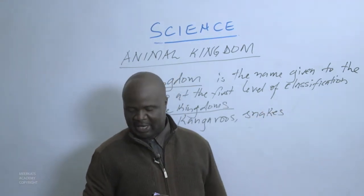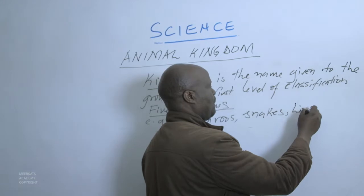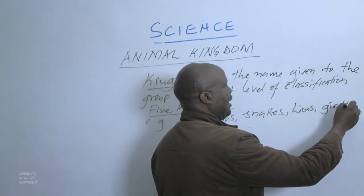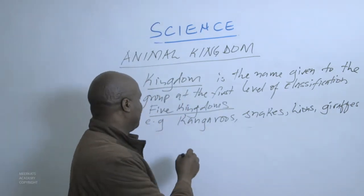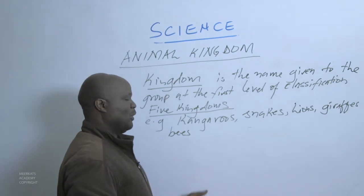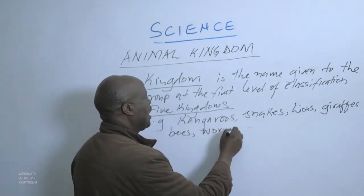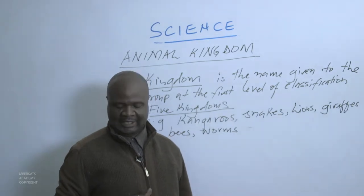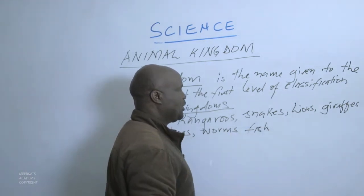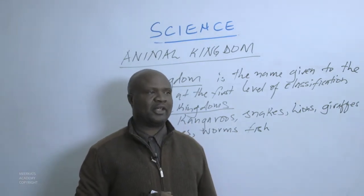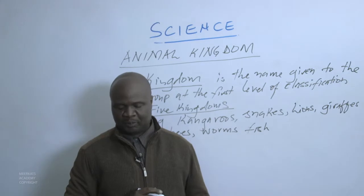We have snakes, which are found within the animal kingdom. We have lions. We have bees — insects are also animals found within the animal kingdom. We have worms, also found within the animal kingdom.